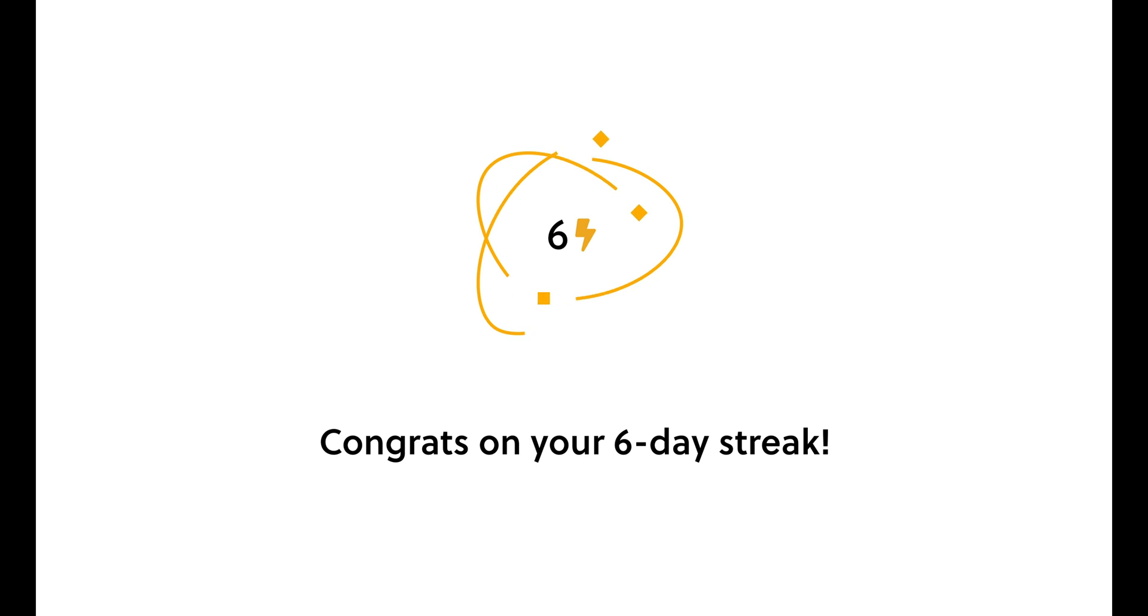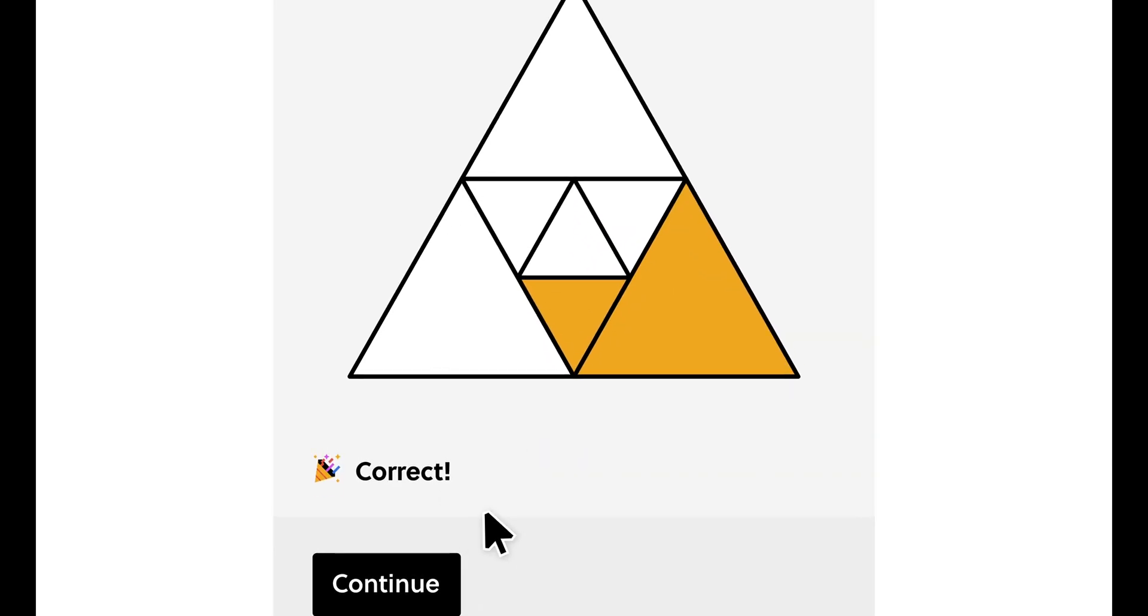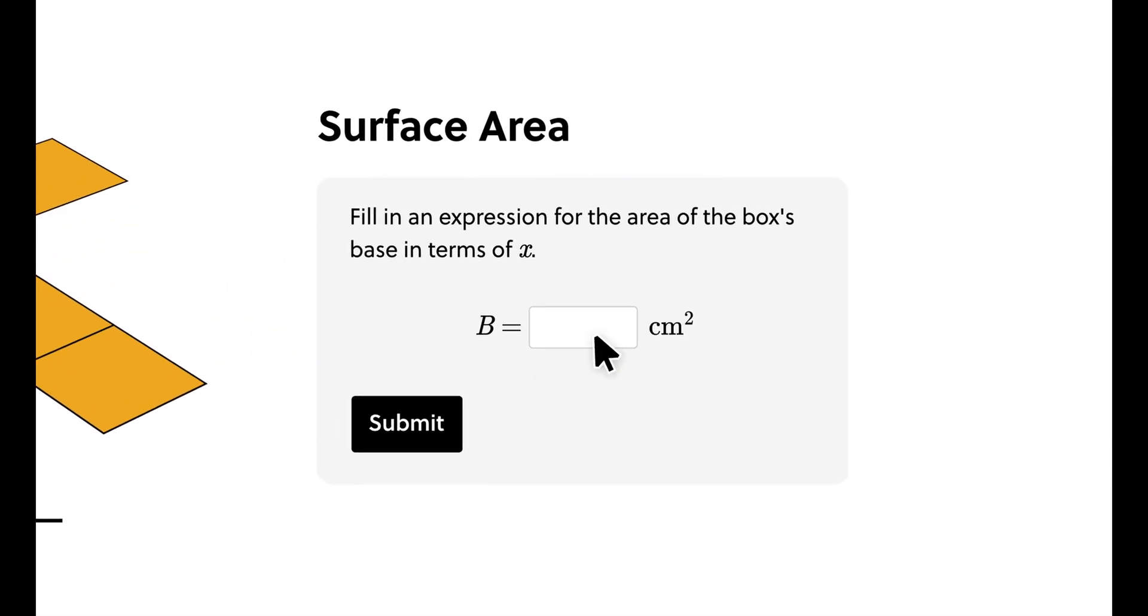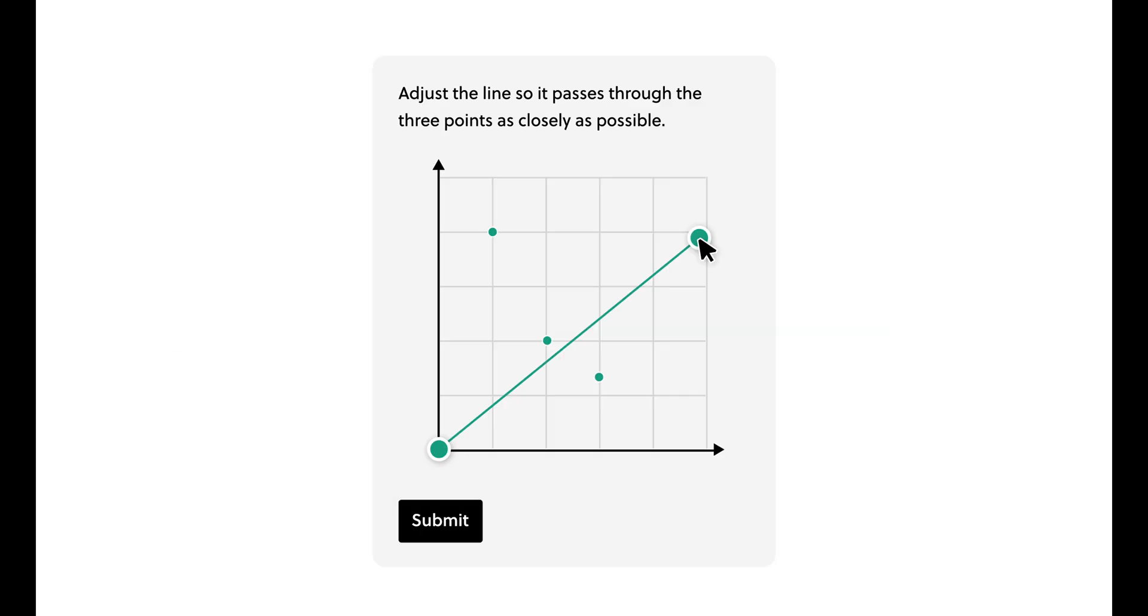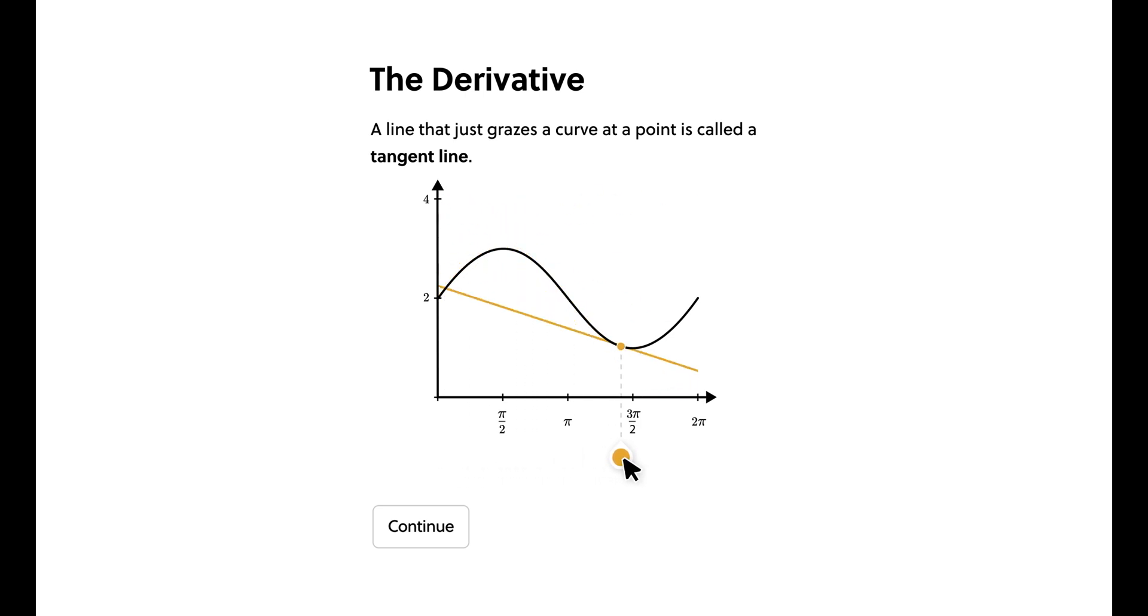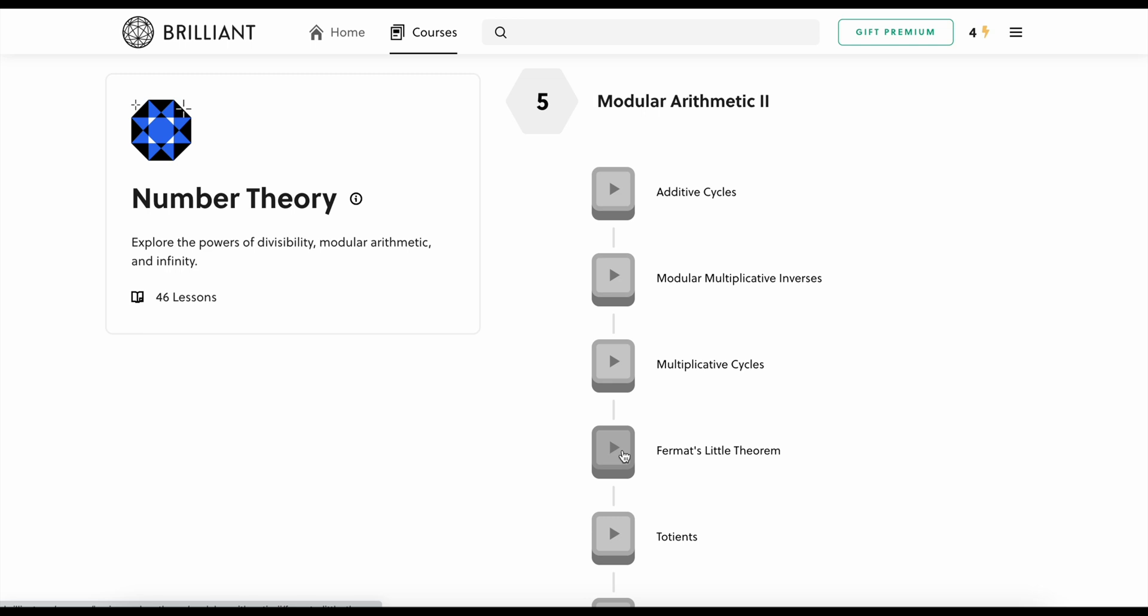Brilliant makes learning more like a game with fun features that let you challenge yourself and compete with others. No matter what skill level you're at, Brilliant can help you improve. Not sure where to start? They have introductory courses in a variety of STEM topics from calculus, physics, computer science, and more, including a great number theory course that'll help you understand the topics in today's video.